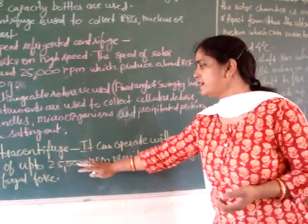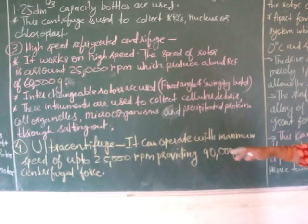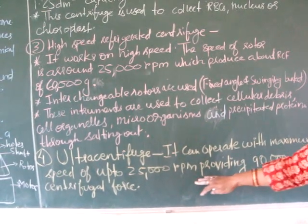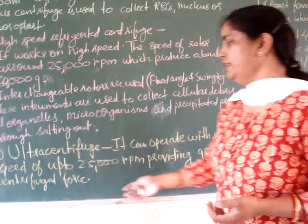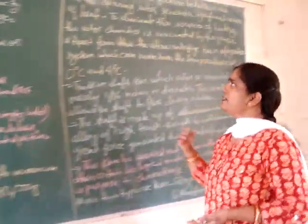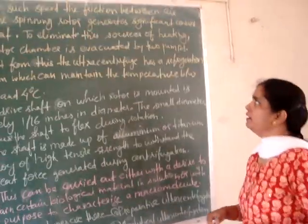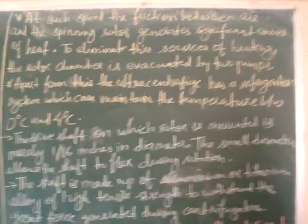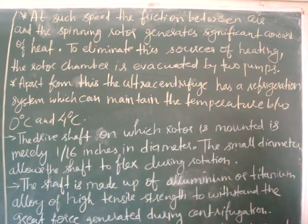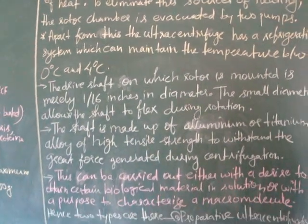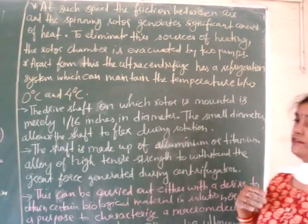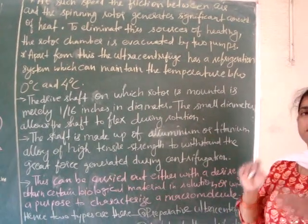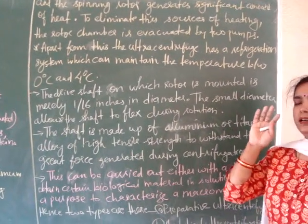The last type is the ultra centrifuge. As the name suggests, it can operate at a maximum speed of up to 75,000 RPM, providing 500,000 G centrifugal force. At such speeds, friction between air and the spinning rotor generates a significant amount of heat. To eliminate this heat, the rotor chamber is evacuated. Apart from this, the ultra centrifuge has a refrigerating system which maintains the temperature between 0°C and 4°C.